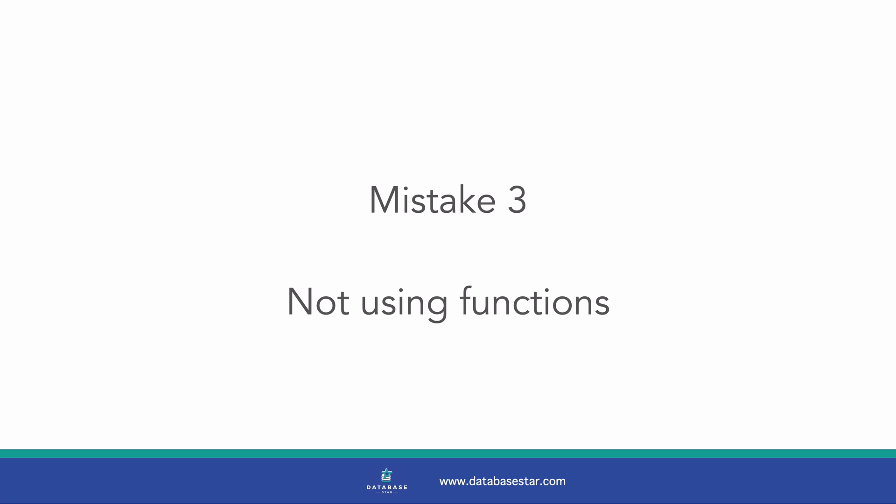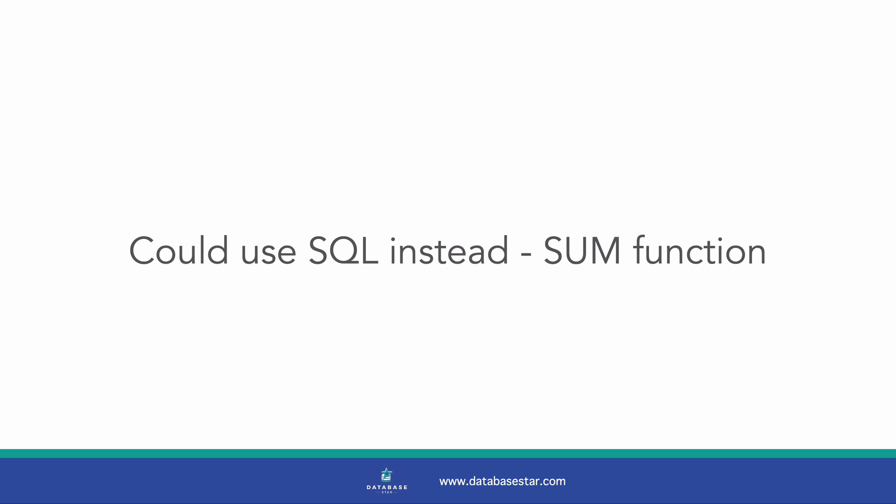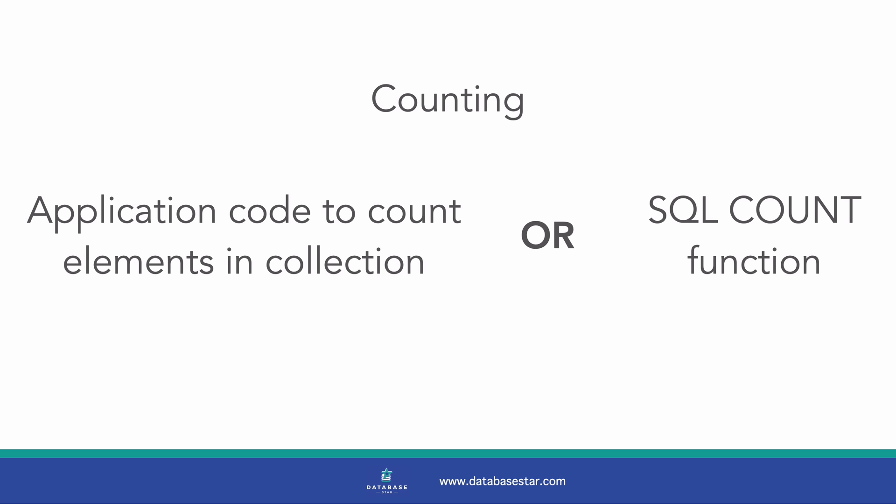The third mistake that beginners to SQL often make is not using functions. This is another example of something that's possible in application code, but it's often better and easier to do in the database. Let's say you needed to get the total of a series of numbers. You could select these values from the database, loop through them in your application code, and calculate a sum. This would work, but you could use SQL for this. SQL includes many built-in functions to process data and give you a result. One example is the SUM function — you can use this to get the total of a series of numbers. Another example is the COUNT function, which gets the number of records.